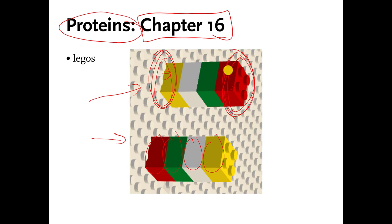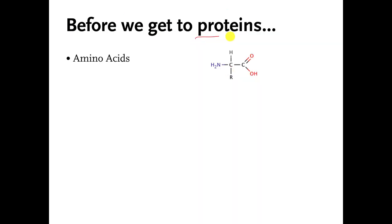Now, this obviously doesn't really have to do with proteins, but I'm going to try to make it relevant to protein molecules in a little bit, so keep this in the back of your mind. This chapter is on protein molecules, but before we get to protein molecules, we have to talk about a kind of molecule called an amino acid.